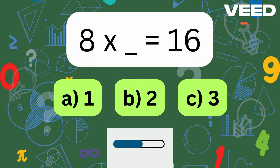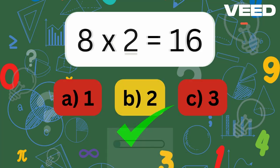8 times what is 16? 8 times 2 is equal to 16.